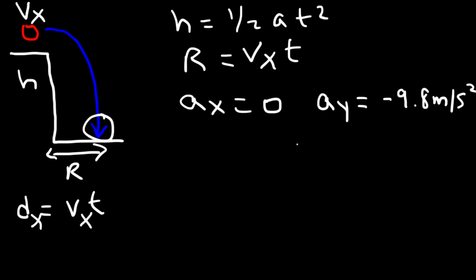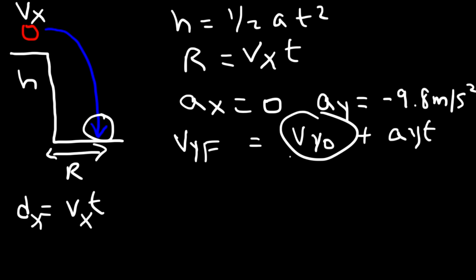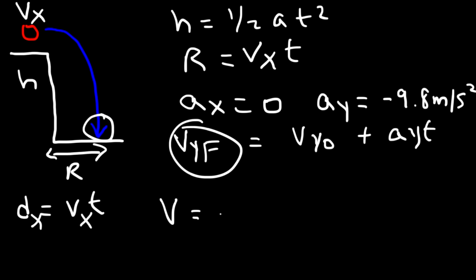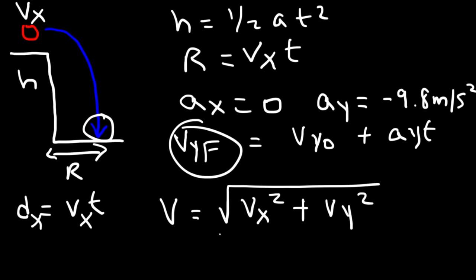To calculate V_y, use V_final equals V_initial plus A·t in the y direction. V_y_initial is zero at the top, so you can find V_y_final using this equation. Then, to find the speed of the ball just before it hits the ground, use the horizontal and vertical velocities combined. If you need to find the angle, use inverse tangent of V_y divided by V_x.